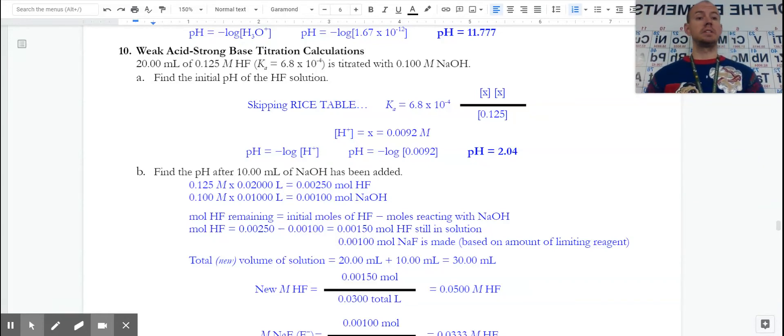Here on number 10, we're doing something similar to number 9, but with a weak acid being titrated with a strong base. Some of the process is exactly the same, some of it gets a little bit different because we do have some equilibria.